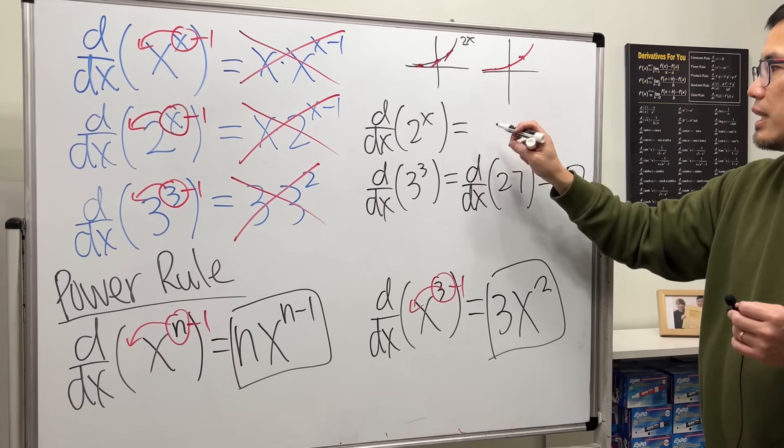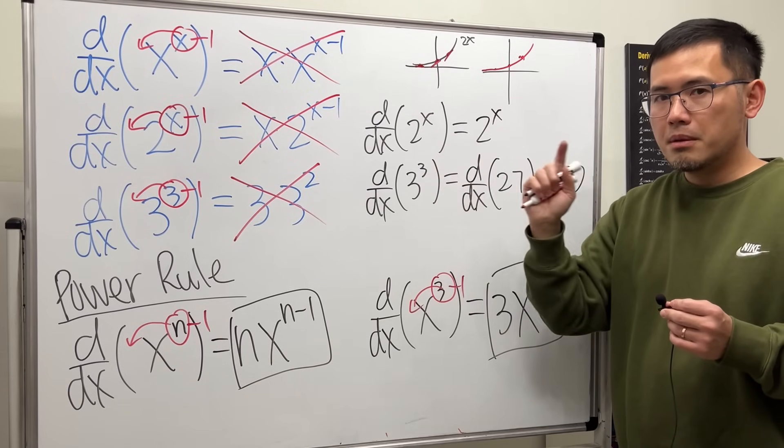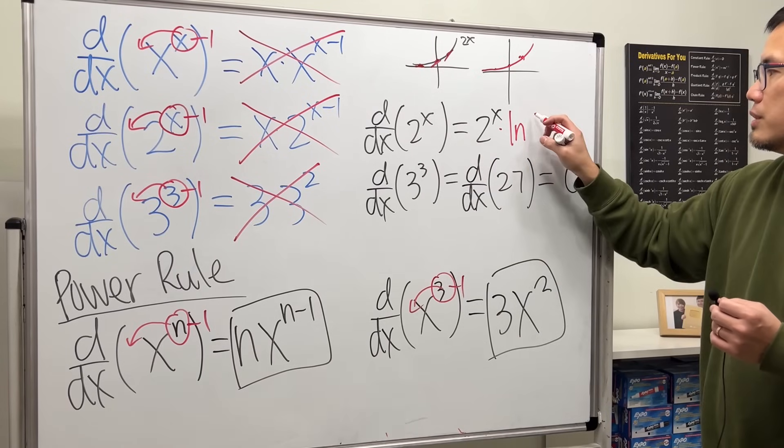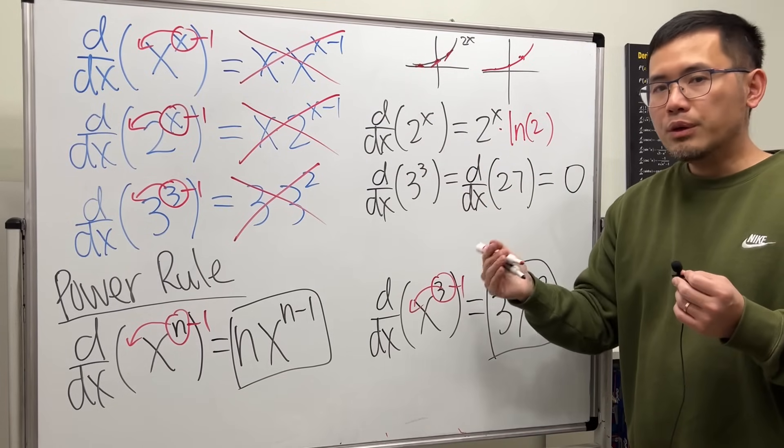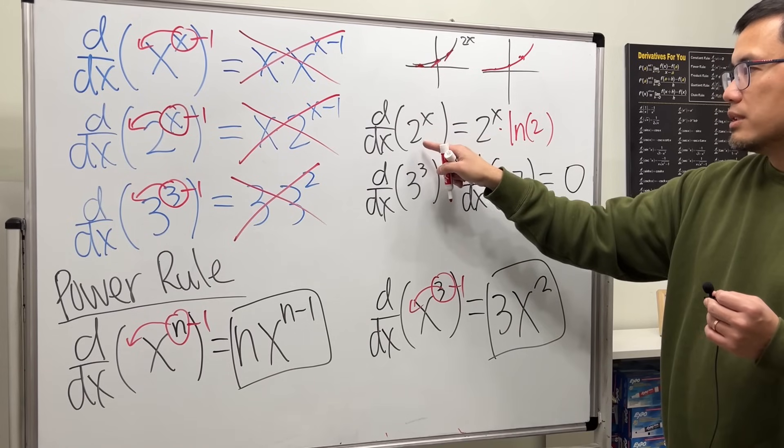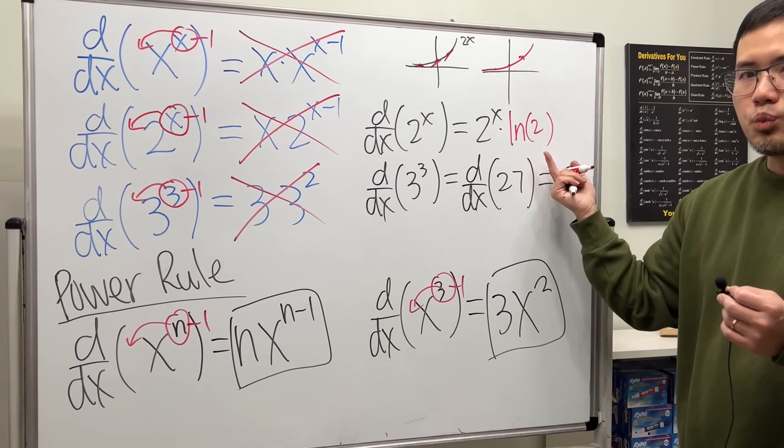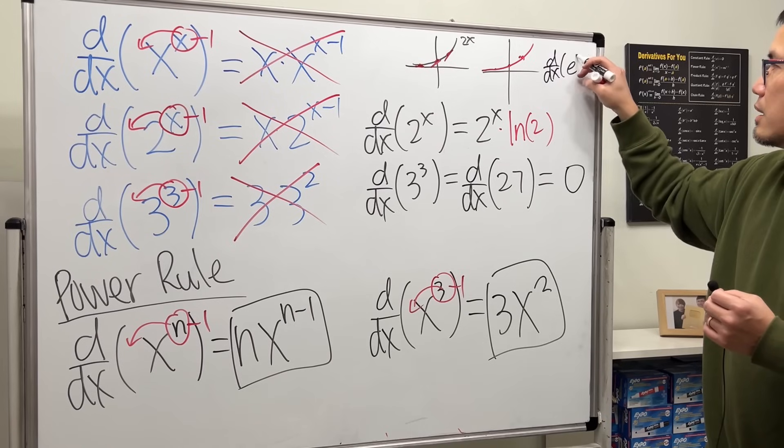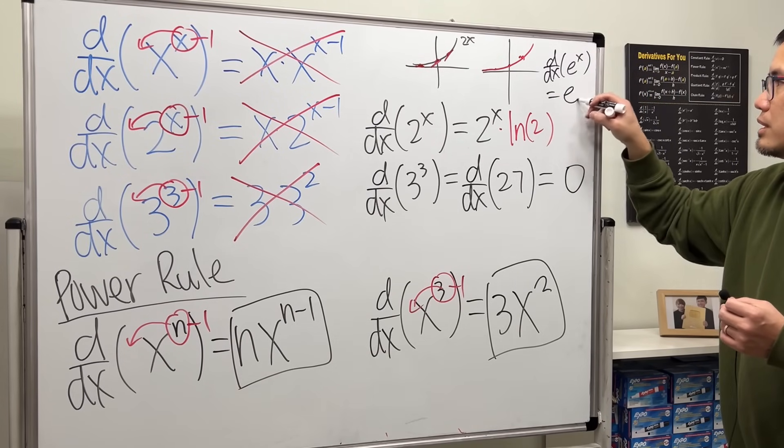The truth is, you still end up with 2 to the x. This part stays the same, but you will multiply by a constant, ln of the base, which is ln2. And this is the derivative for that. And you can imagine, if we have e to the x, you will just get e to the x times ln, for its derivative. ln(e) is 1. So the only function that you get back, its derivative is just itself. Besides 0, it's just e to the x.